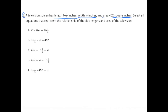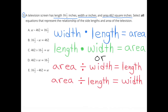Number 3: A television screen has a length of 16 and 1 half inches, width w inches, and area 462 square inches. Select all equations that represent the relationship of the side lengths and area of the television. We'll be looking for: width times length equals area, length times width equals area, area divided by width equals length, and area divided by length equals width.